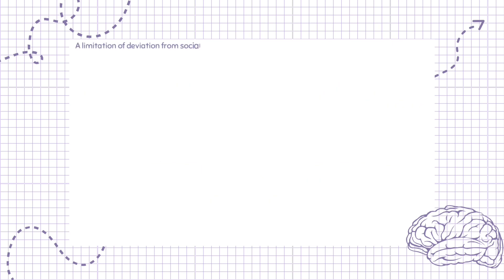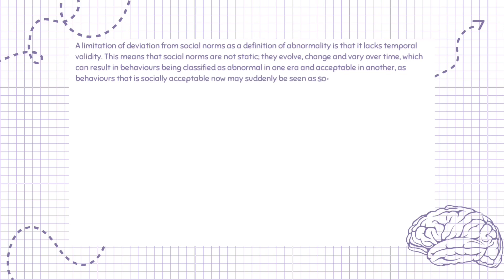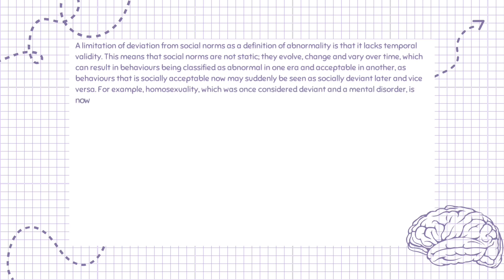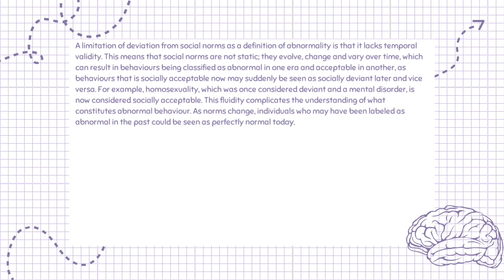A limitation of deviation from social norms as a definition of abnormality is that it lacks temporal validity. Social norms are not static — they evolve, change and vary over time, which can result in behaviors being classified as abnormal in one era and acceptable in another. For example, homosexuality, which was once considered deviant and a mental disorder, is now considered socially acceptable. This fluidity complicates the understanding of what constitutes abnormal behavior, raising questions about the reliability of using social norms as a benchmark for abnormality.